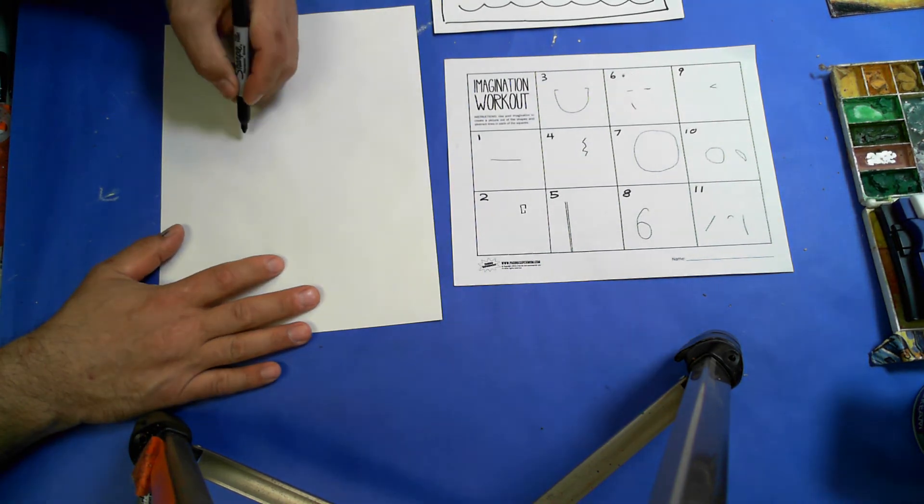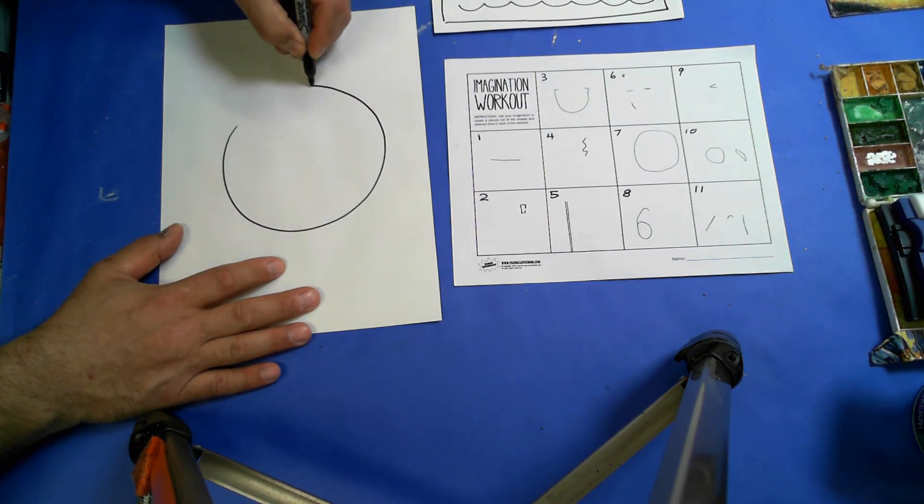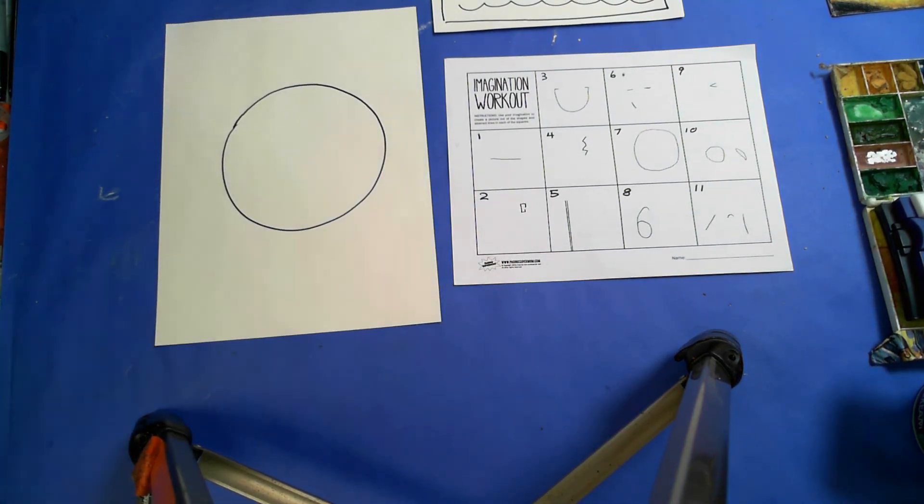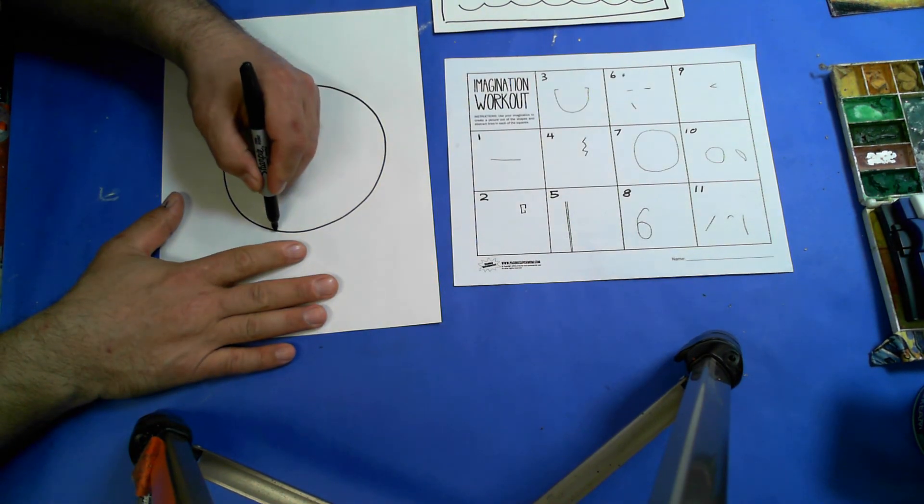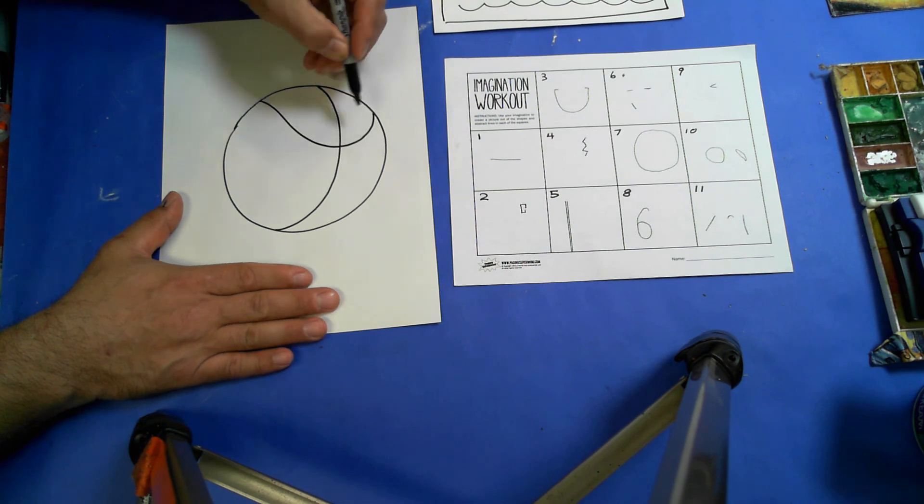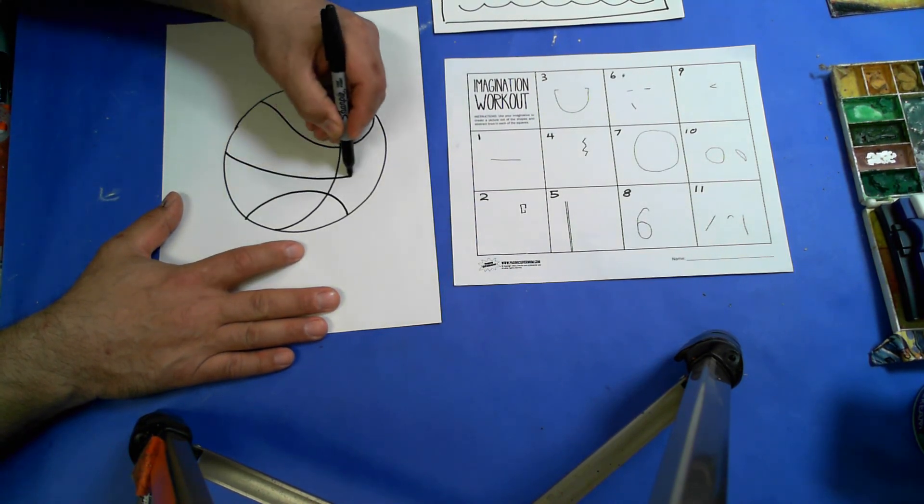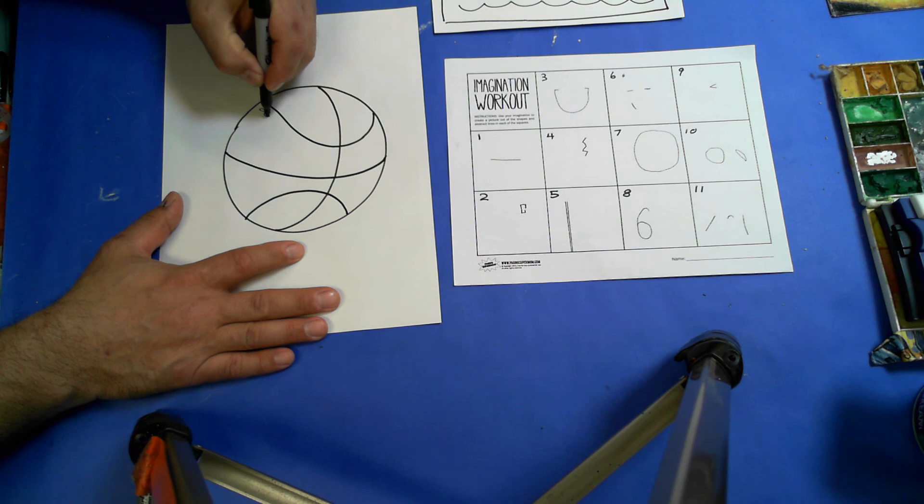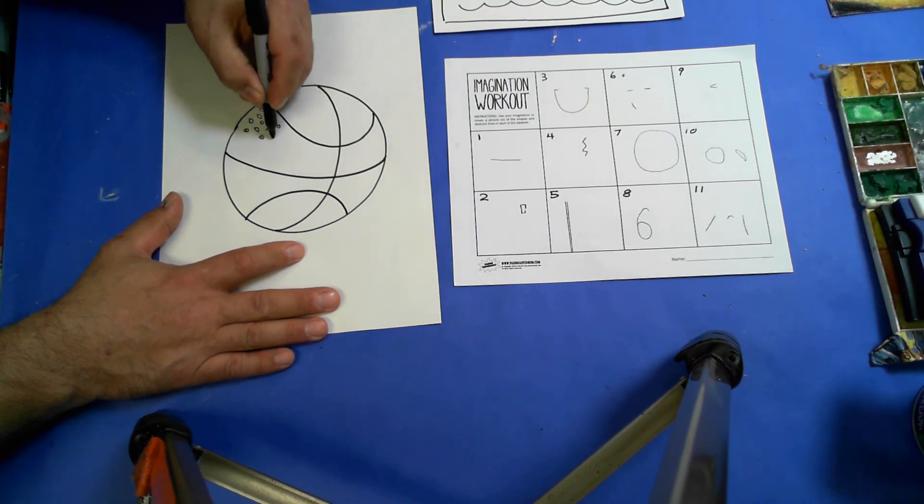Here we go. Here's the circle. What do I want it to be? I could draw a line like this. I could draw another line like this. Another line like this. I could draw a line like this. I could add little... As basketballs have.